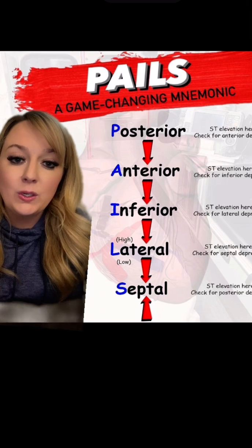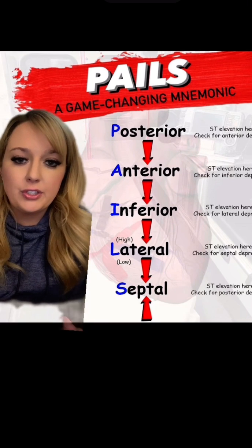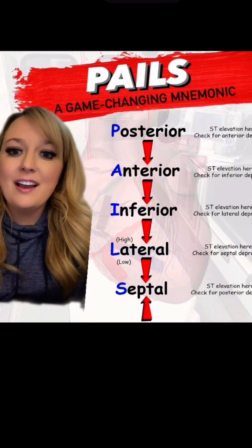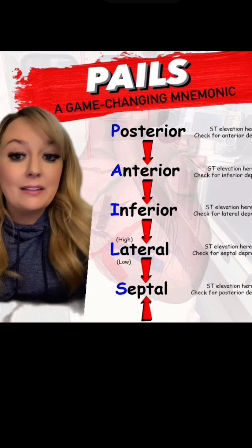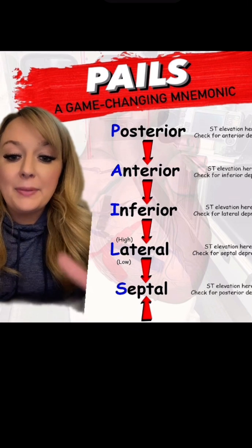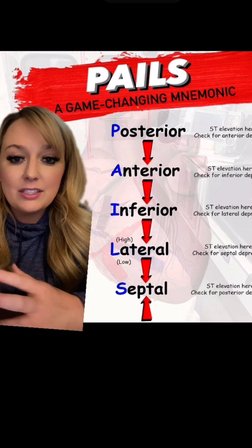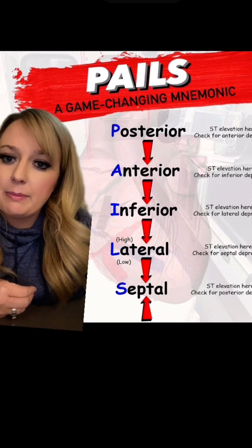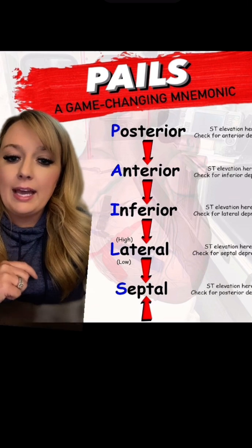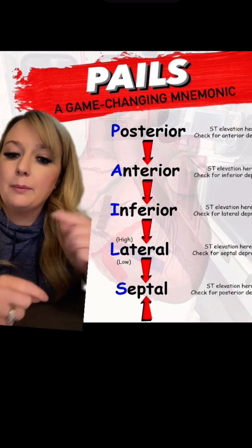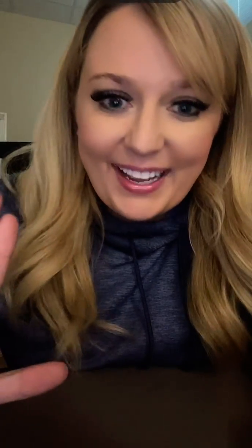So it's a super easy tool. Of course, you want to make sure that your students understand the heart, understand the different locations, the contiguous leads, the lead views, and all of that. But this is a mnemonic that will definitely help them, especially in a testing situation, and even in a pinch in the back of the ambulance — like, I see elevation in 2, 3, and AVF, those are my inferior leads, so I'm going to check my high lateral leads for reciprocal depression.